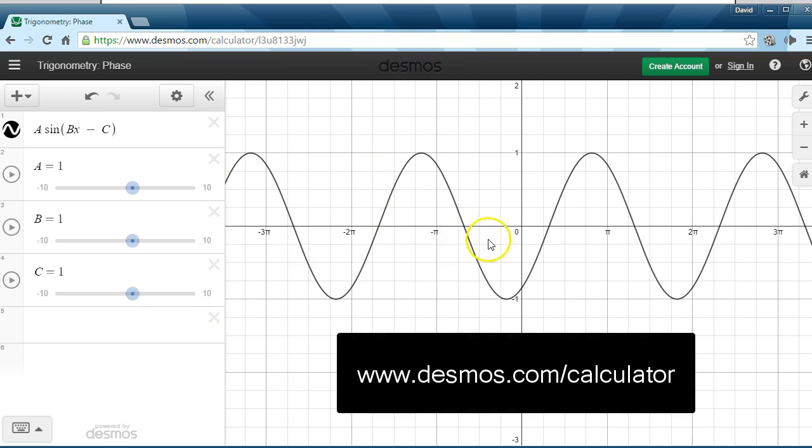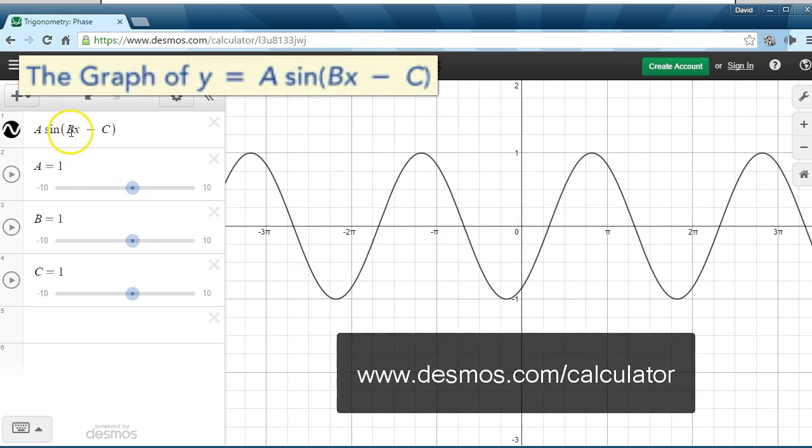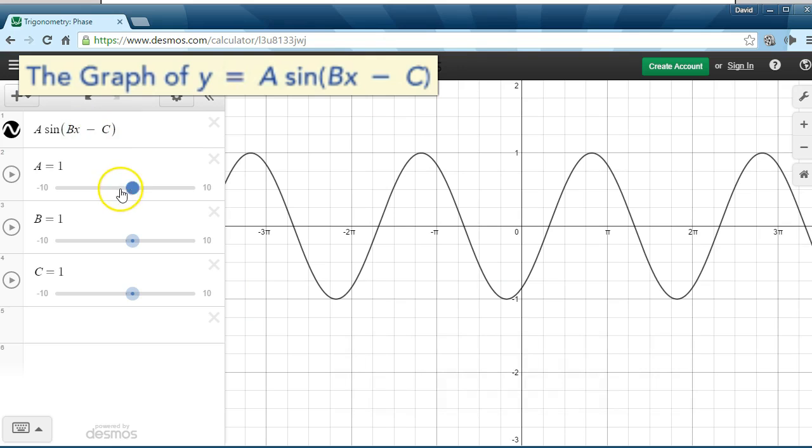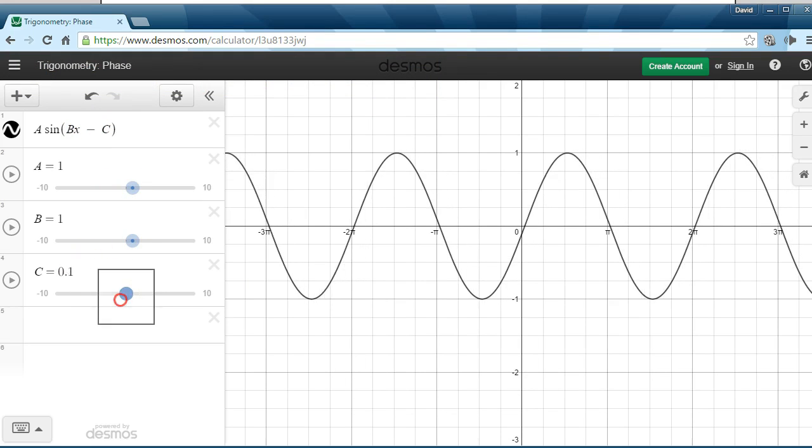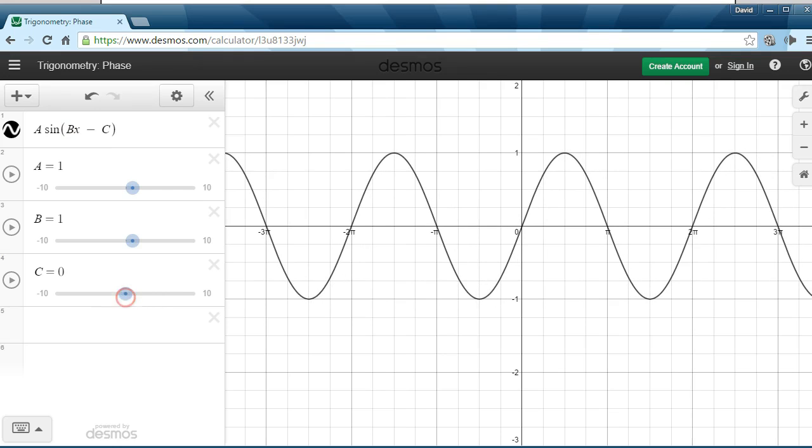So this is Desmos, we're going to look at what happens if we have A sin(Bx - C). Now notice I'm going to make C right now, I'm going to make it 0 to start off. And if you look, what we're looking at right now is just the sine function. So it's 1 sine times 1 times x minus 0, so this is just the sine function.